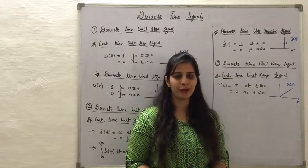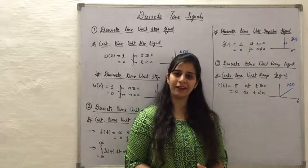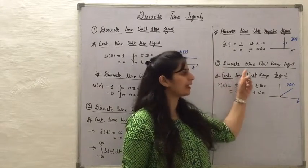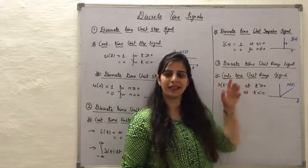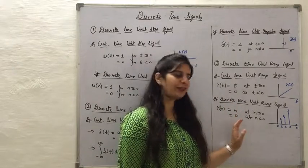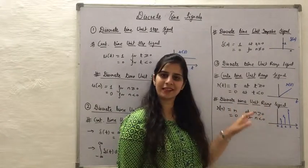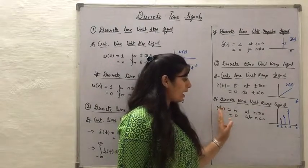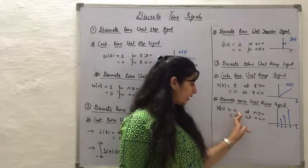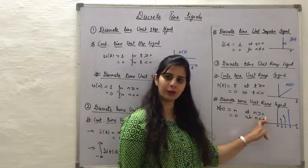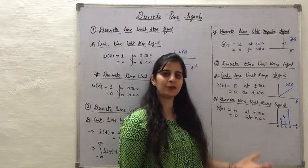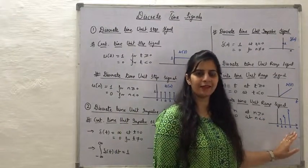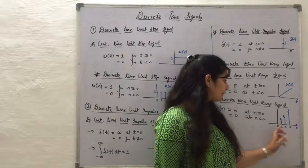The discrete time unit ramp signal is denoted r(n), where r(n) equals n for n greater than or equal to 0, and 0 for n less than 0. This is the waveform of the discrete time unit ramp signal.